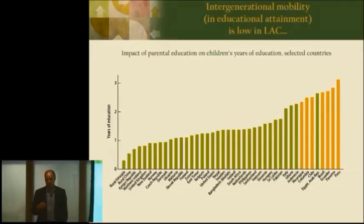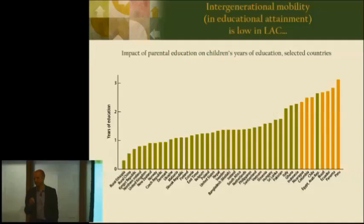Intergenerational mobility requires you, ideally, to observe the same variable for two generations — parents and children. That's difficult to do with incomes; it's easier to do with years of schooling. So we start with this graph, which is actually drawn from some work done by Tom Hertz and various co-authors at American University.